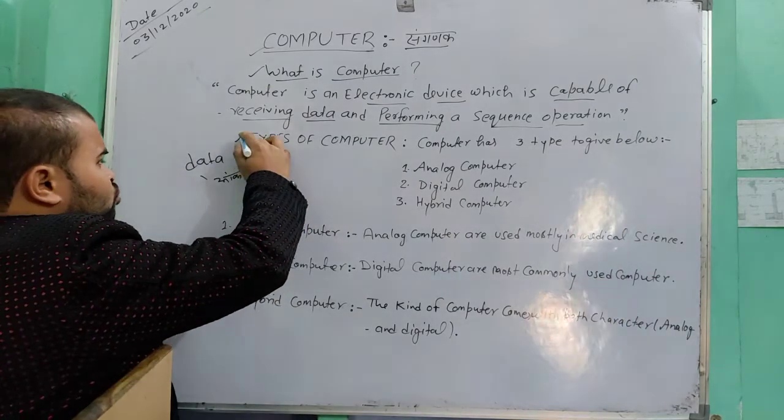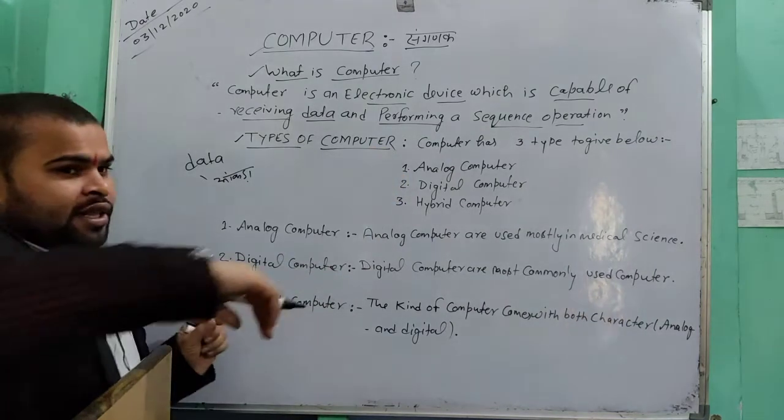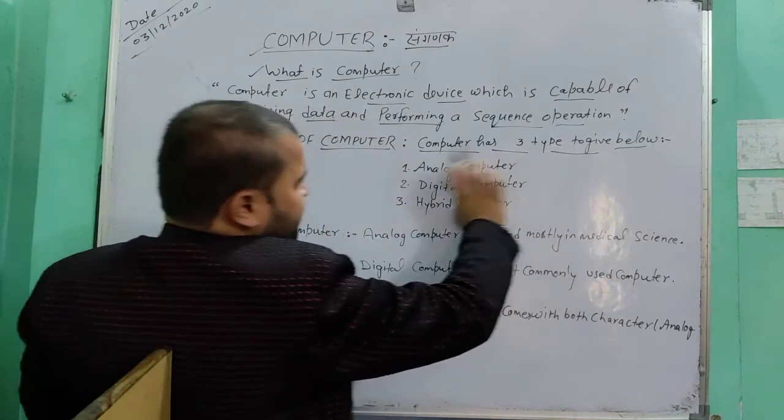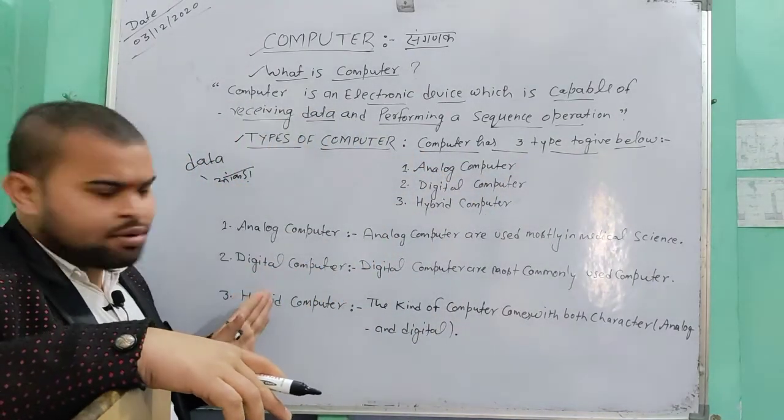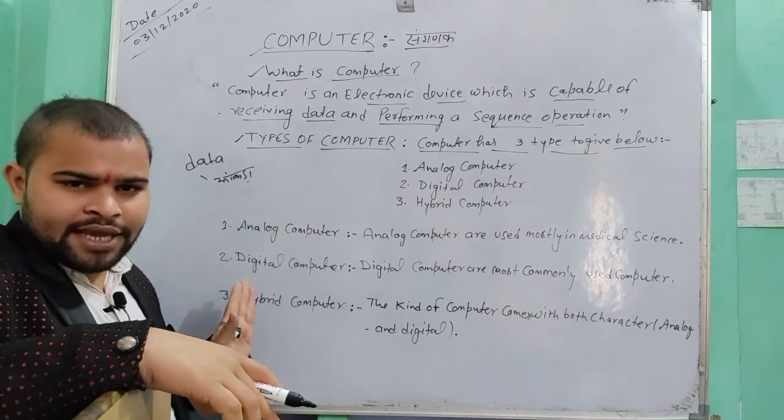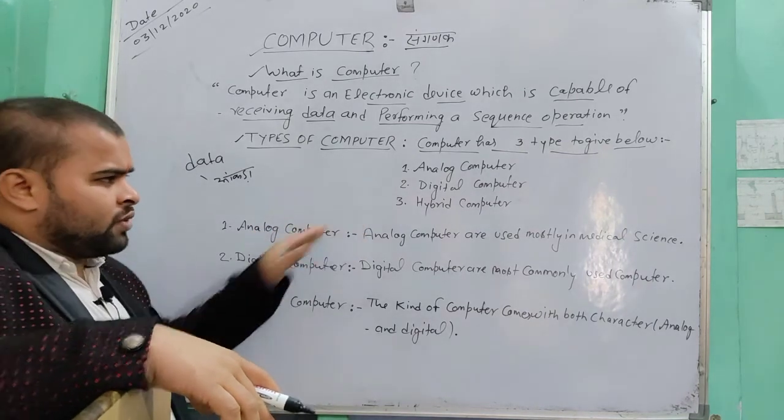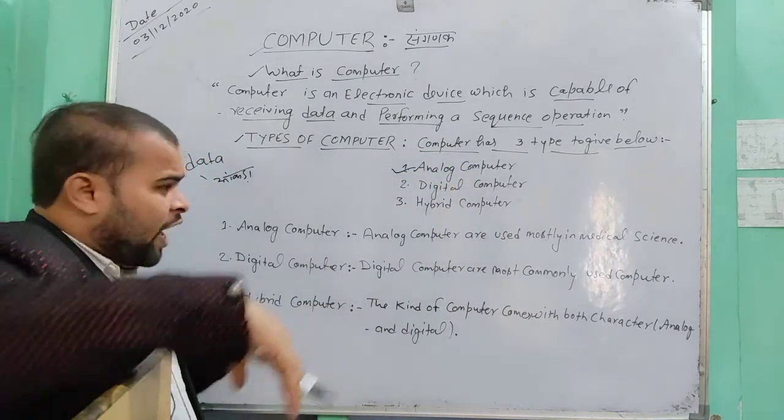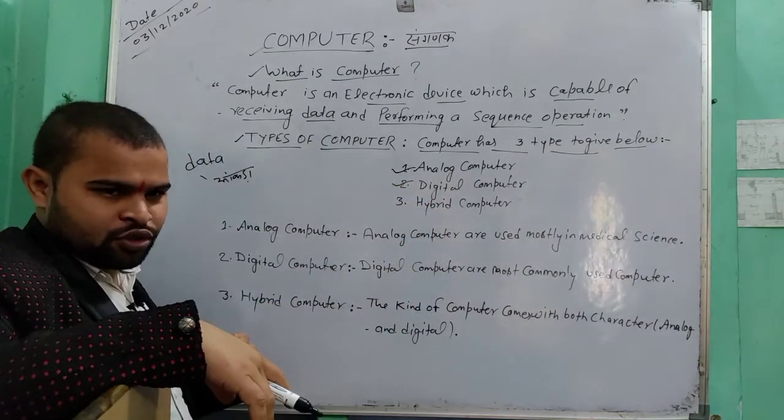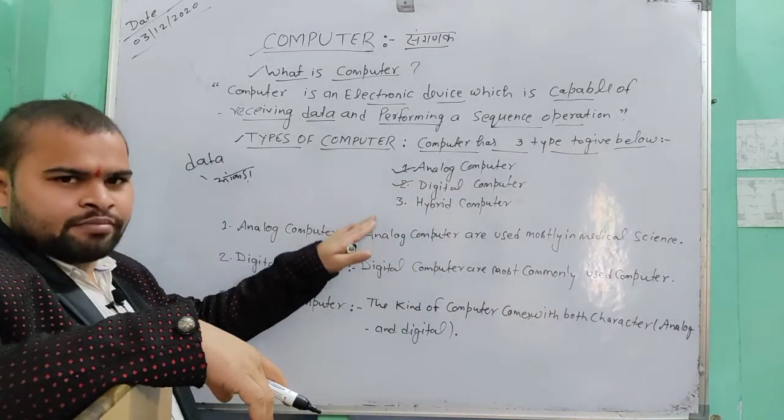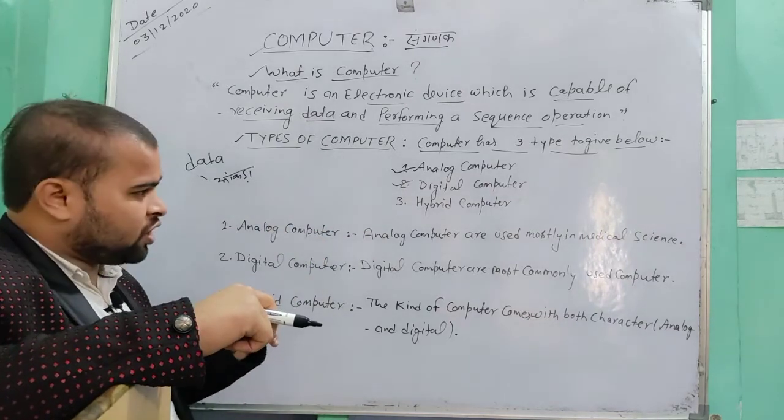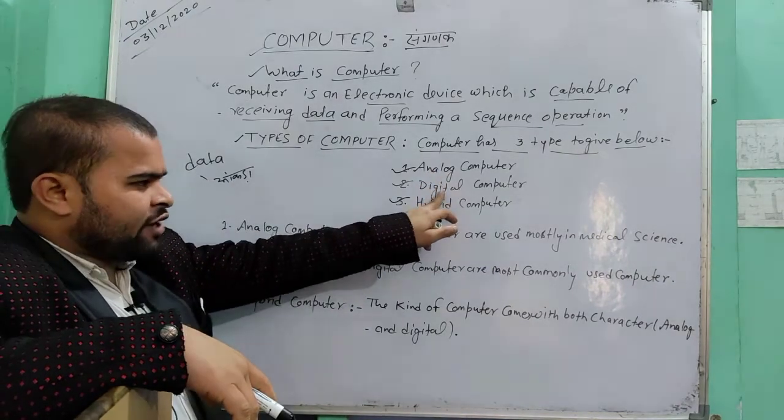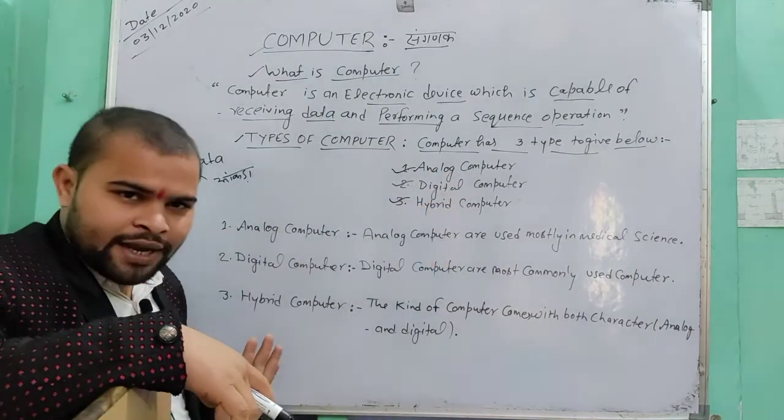Let's go to another topic: types of computer. Computer has three types. We have many broadcasting conditions which we will tell in our next video. First computer is analog computer. Second is digital computer. Third is hybrid computer.